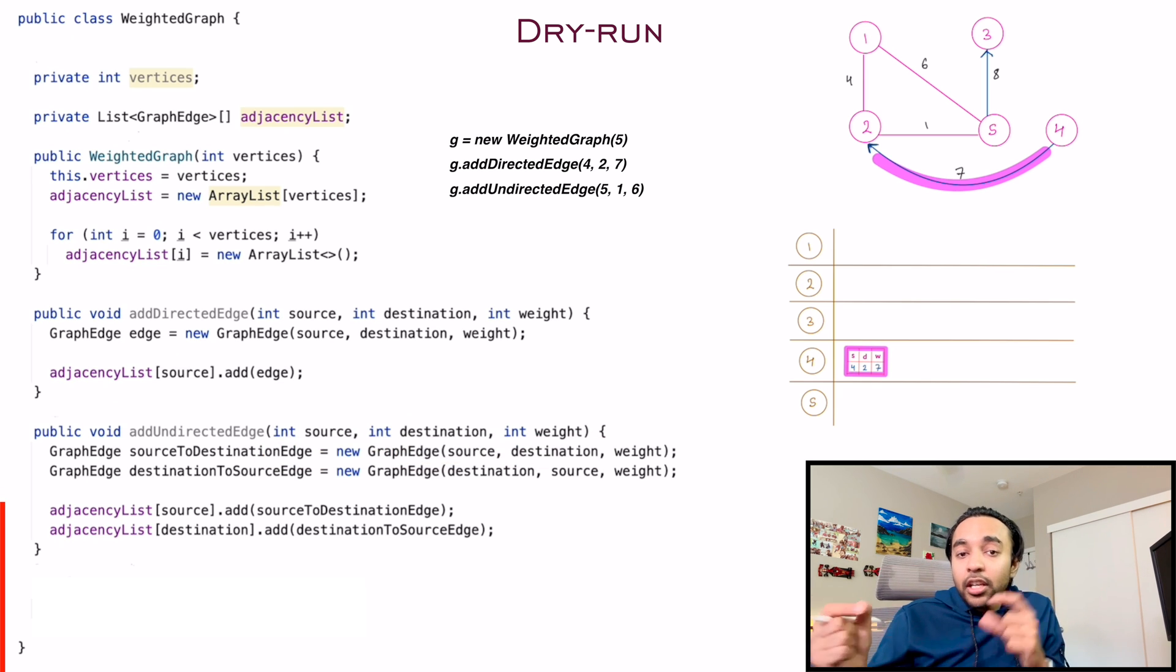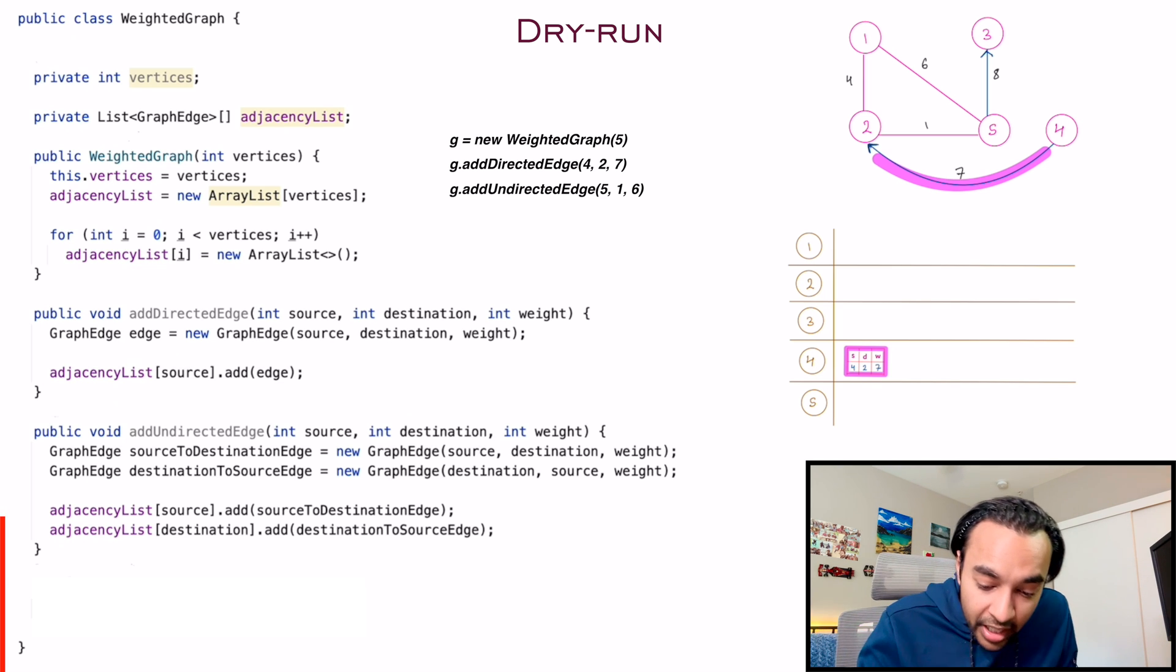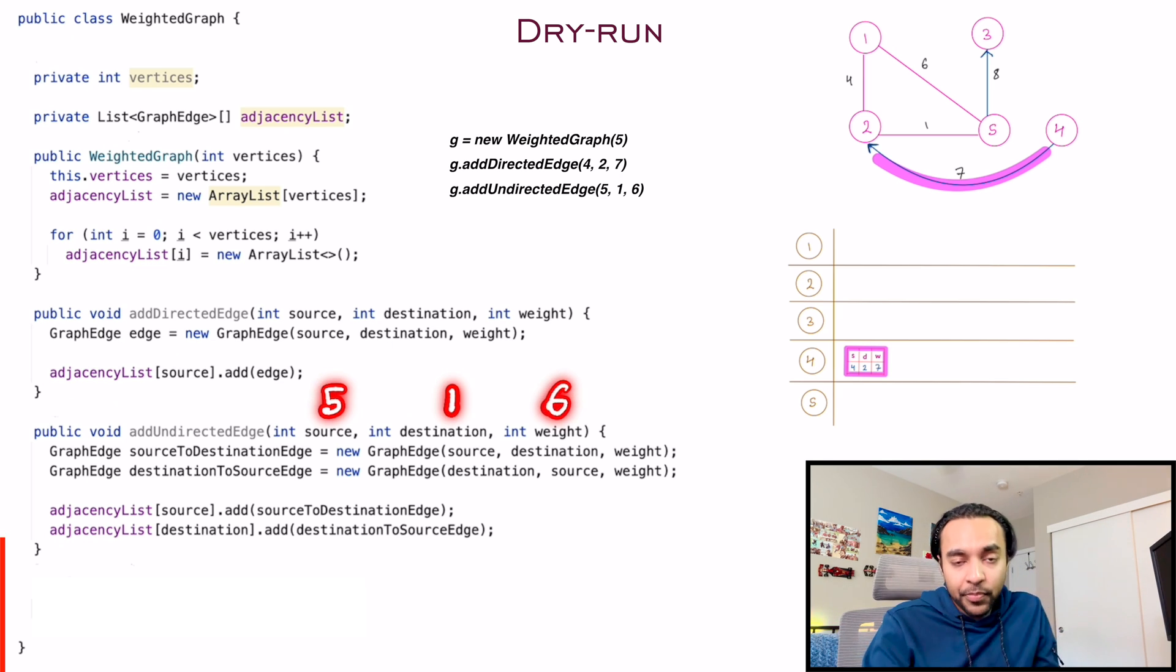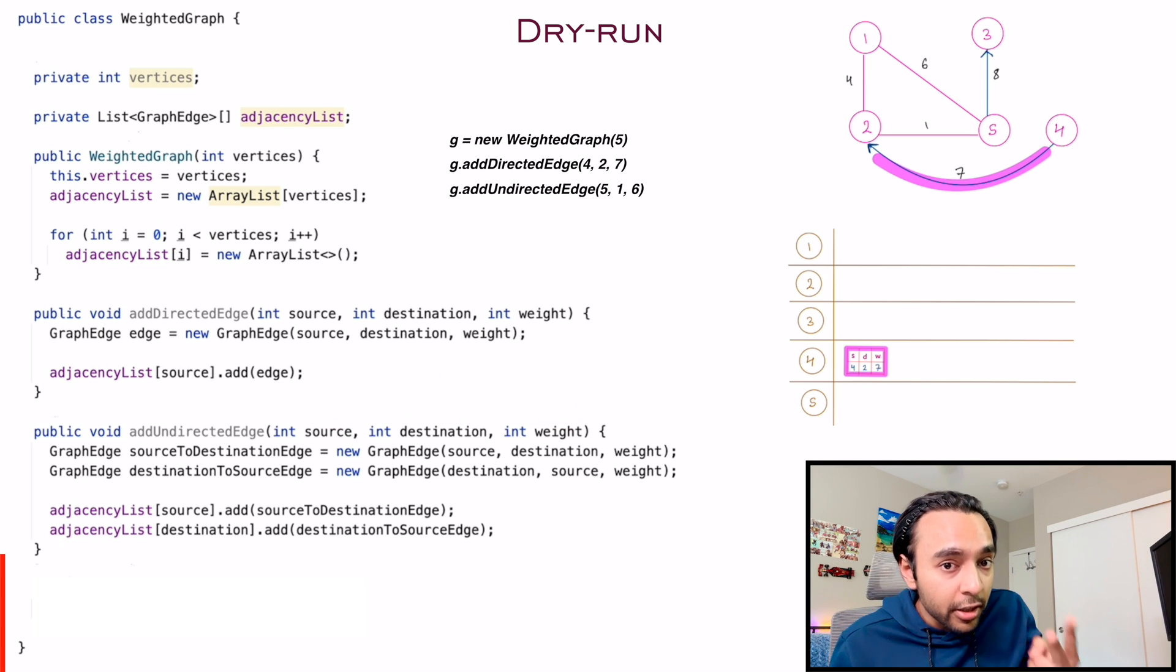Since it is an undirected edge, you can have any of the nodes as the source and any as the destination. So let us say I pass in an argument, the source is five, the destination is one, and the weight is six. So these are my three parameters. What do you do? First of all, you will have to make two edges.